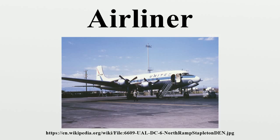The largest airliners are wide-body jets. These aircraft are frequently called twin-aisle aircraft because they generally have two separate aisles running from the front to the back of the passenger cabin. These aircraft are usually used for long-haul flights between airline hubs and major cities with many passengers.